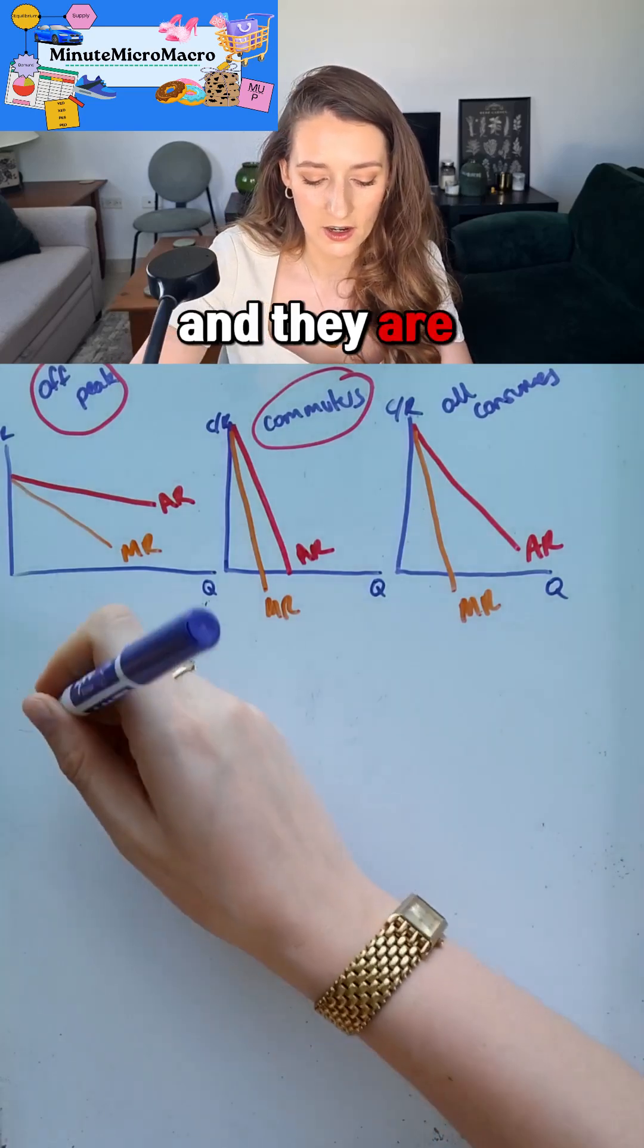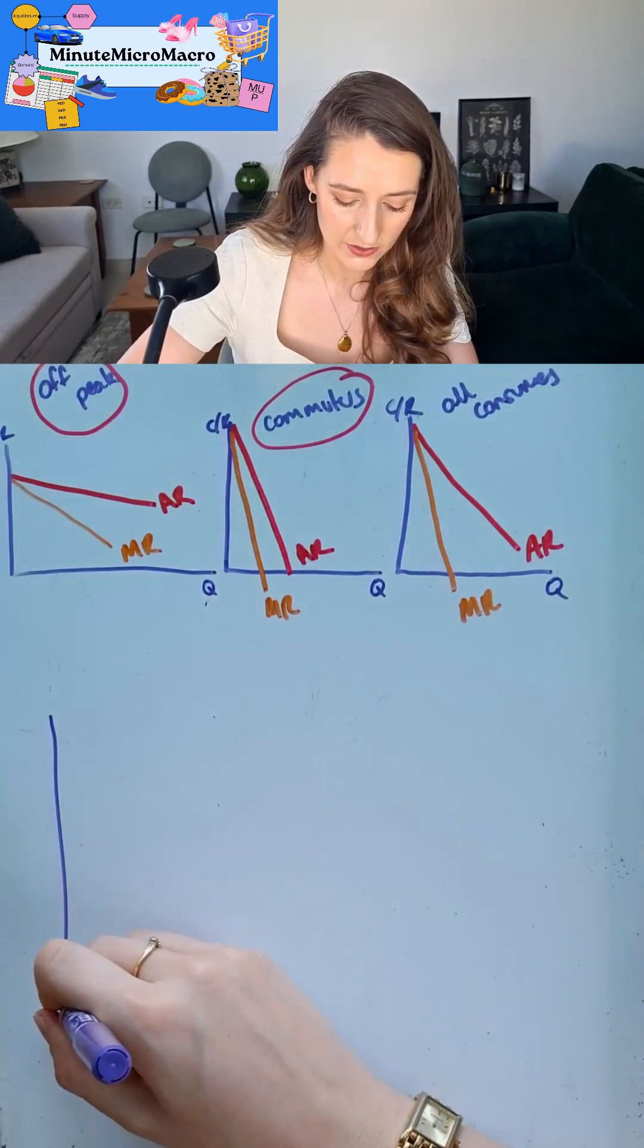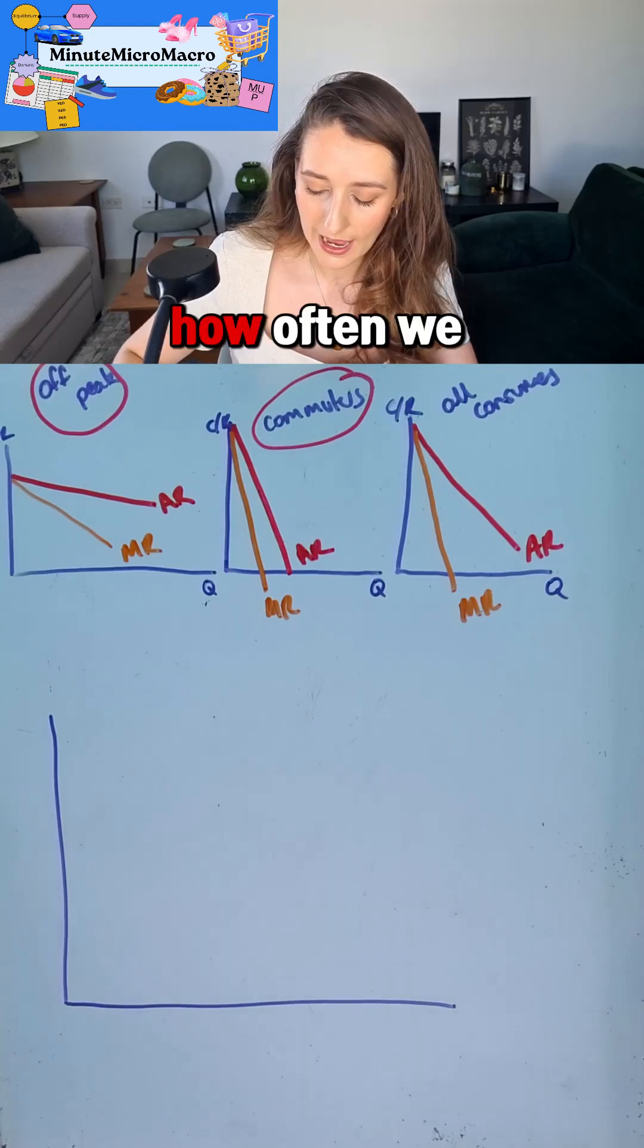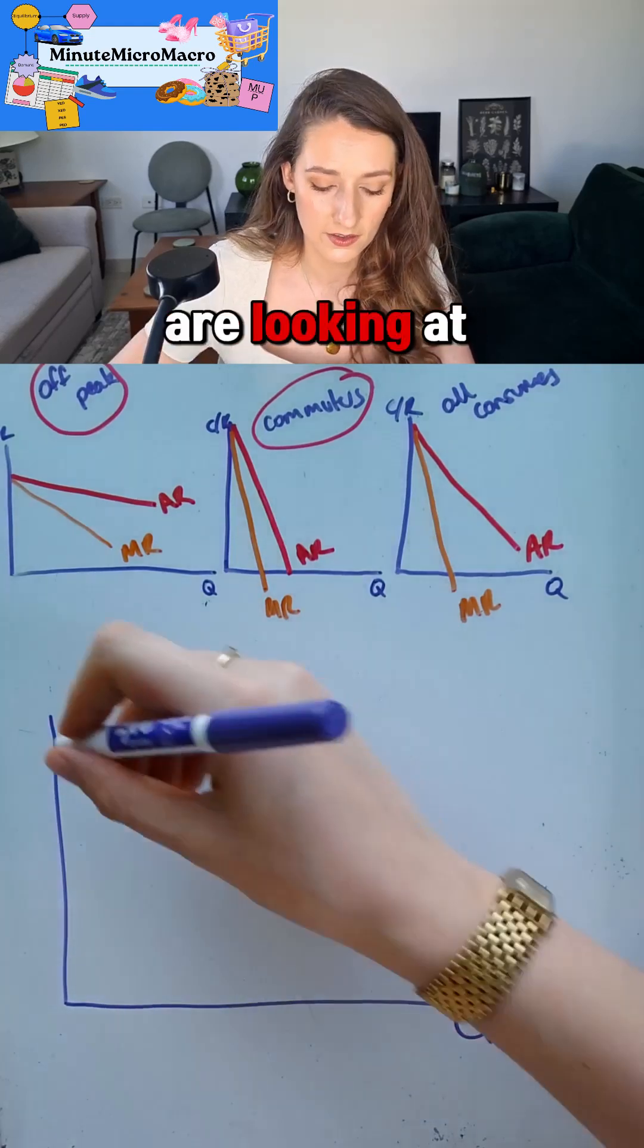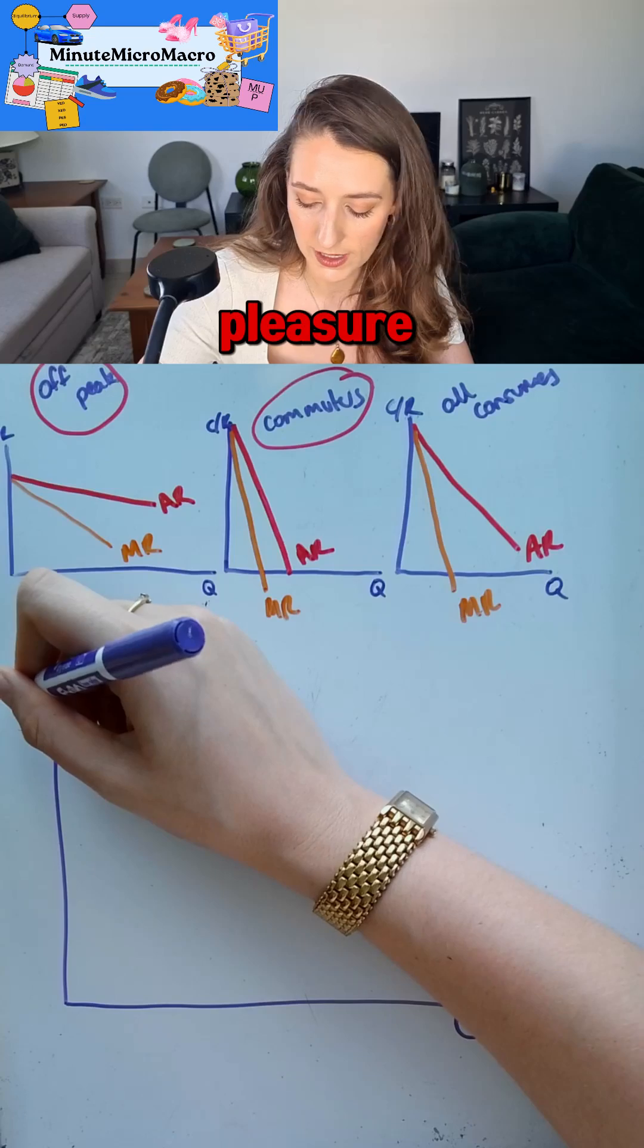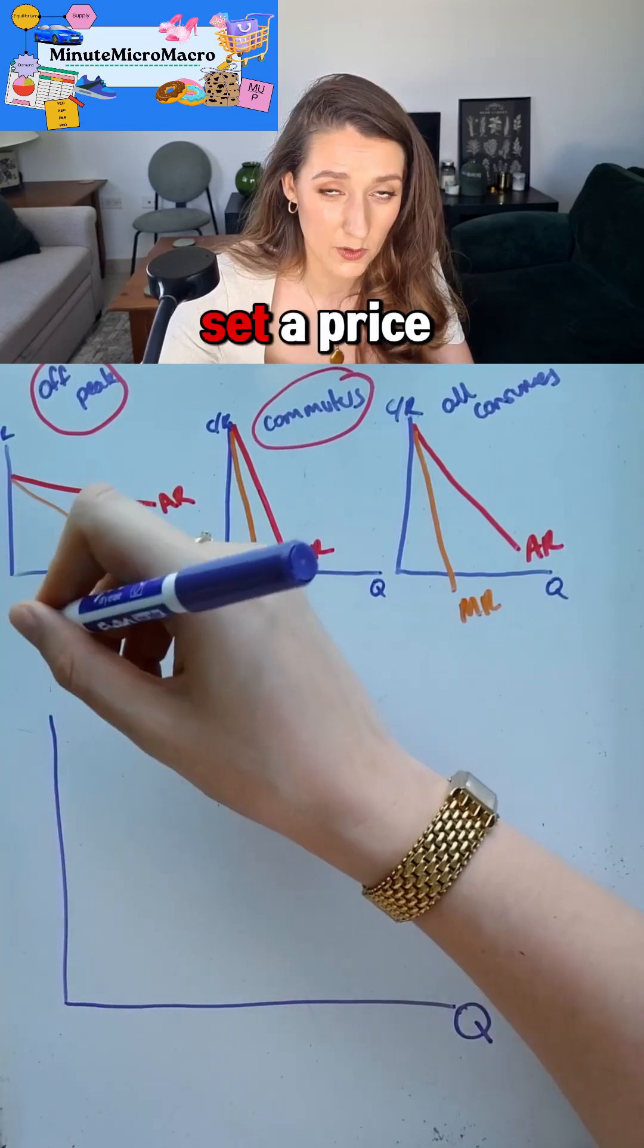They can see whether we're traveling for business or pleasure, and they can set a price that is the absolute maximum we will be willing and able to pay. We know if we were drawing a standard cost-revenue diagram, we would have our average revenue and our marginal revenue.